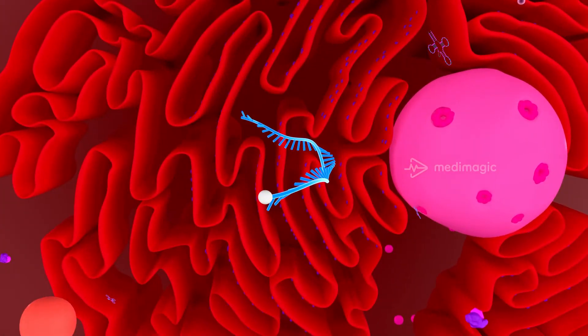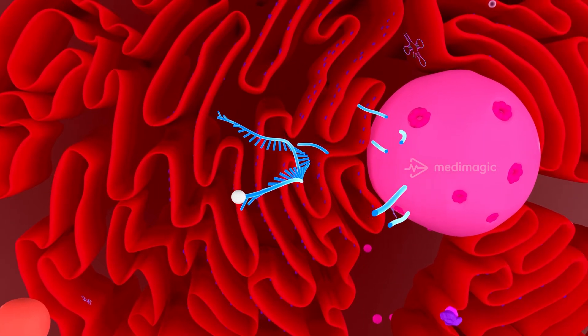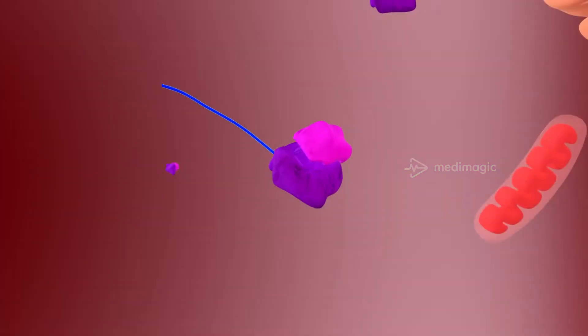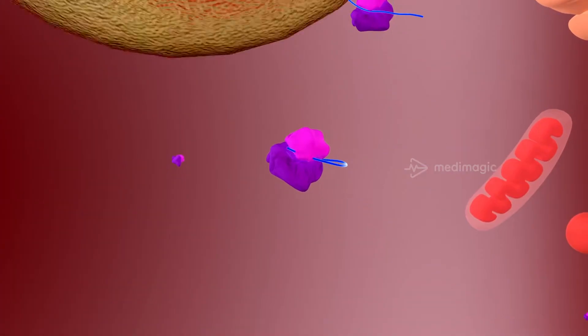In the host, the RNA-dependent RNA polymerase transcribes all the viral RNA into a new set of RNA. The RNA translates into viral proteins.